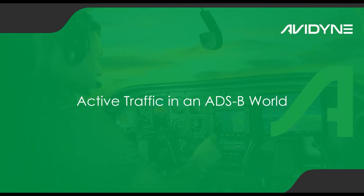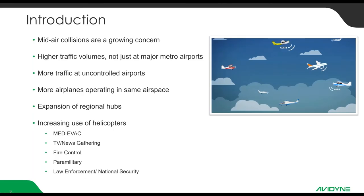Active traffic in an ADS-B world. Some interesting things to note: mid-air collisions are a growing concern. Higher traffic volumes are not just in metro areas — there's more and more traffic at uncontrolled airports, more airplanes operating in the same airspace. Some regional hubs are expanding, and there's increased use of helicopters, including for medevac, TV, law enforcement, fire control, and paramilitary.